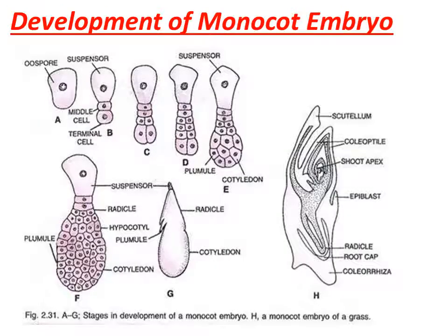In monocotyledonous embryo development, about one half of the terminal cells have derivative function as the shoot apex, while the remainder undergo rapid cell division and form the terminal cotyledon. So the terminal cells form the shoot apex region and the rest form the cotyledon. Only one cotyledon is formed, resulting in the development of a monocot embryo.